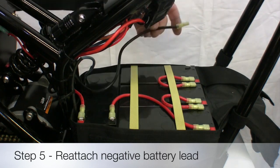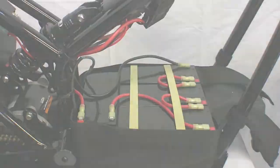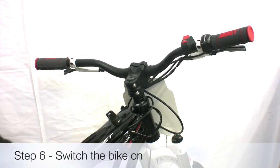Reconnect the black negative battery wire to the negative battery terminal. Switch both key and handlebar switches to on.